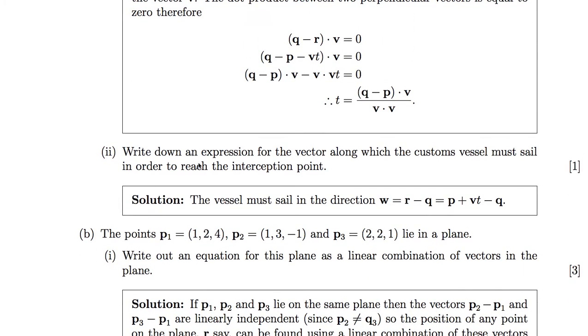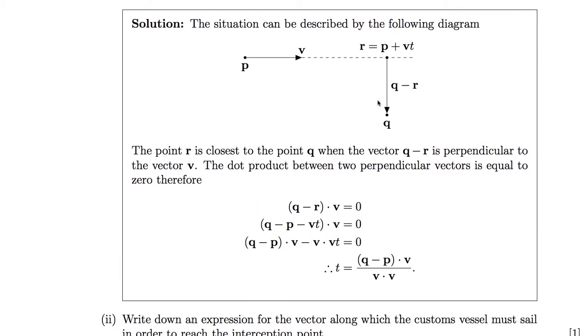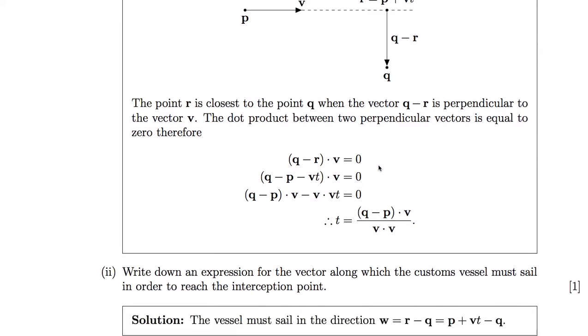Second question: write down the expression for the vector along which a customs vessel must sail to reach the intersection point. This is very simply the reverse of this vector, so it'll be point R minus point Q.